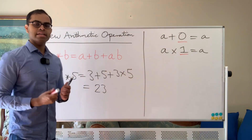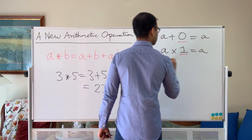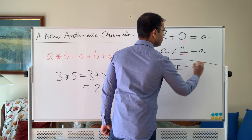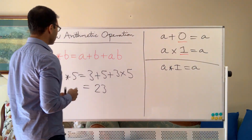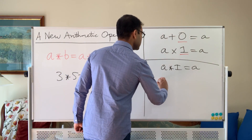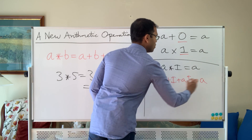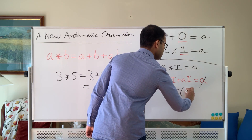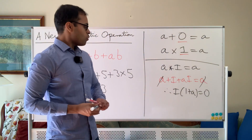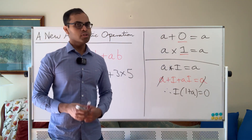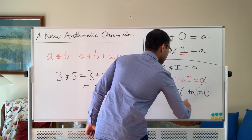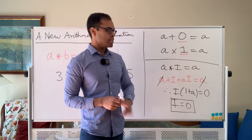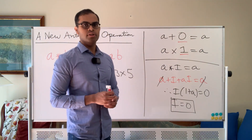Now what about this star operation? Is there an identity, and what is it? We can find that out by solving a simple equation. If an identity exists, let's call it I. We want a star I to be a for all a. Well, a star I is just a plus I plus aI equals a. We can cancel a from both sides and get I times (1 plus a) equals 0, and this should be true for all a. The only number that multiplies with everything to give 0 is 0 itself. So i equals 0 — that's our identity for this operation, the same as addition. A star 0 is always going to be a.